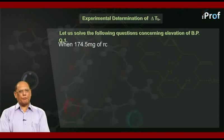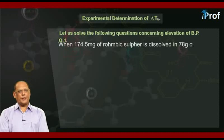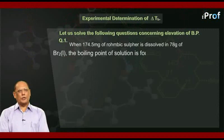174.5 milligrams of rhombic sulfur is dissolved in 78 grams of bromine liquid. The boiling point of the solution is found to be 332.195 Kelvin.